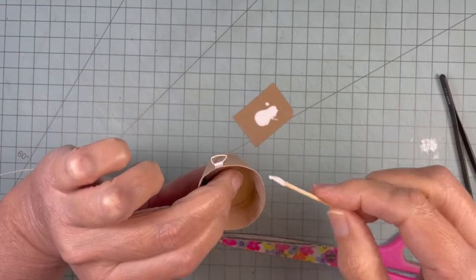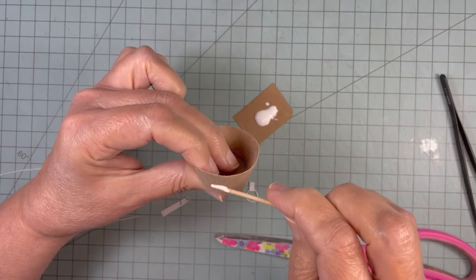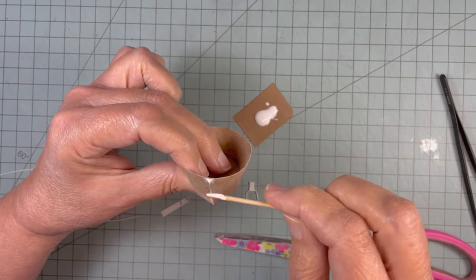I glue the handles to the top edge of the tub. Make sure to line up your handles with each other.